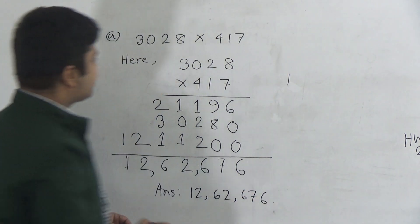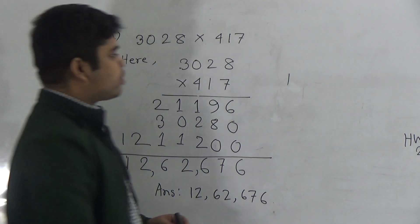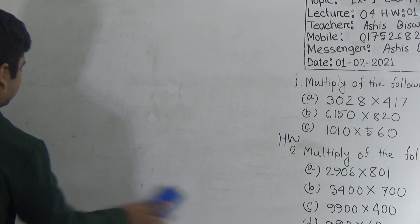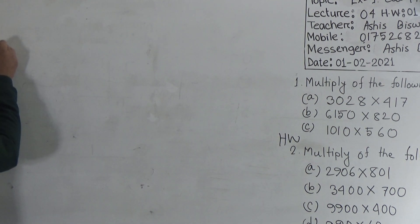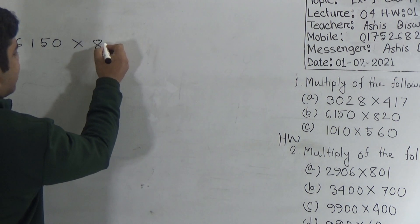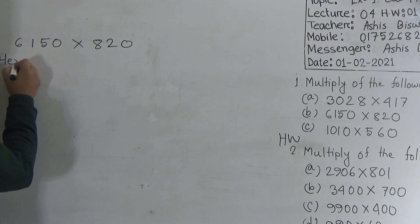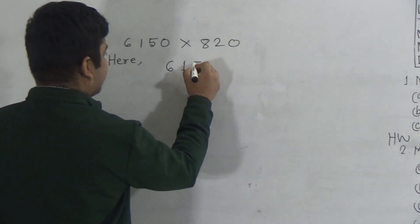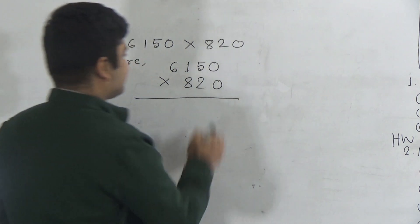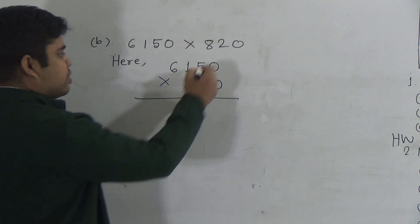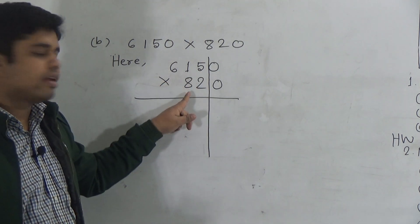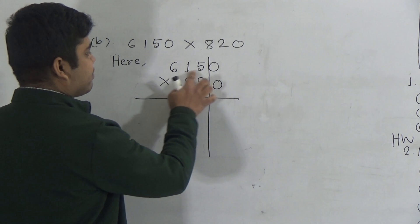Next we shall solve question number b: 6150 multiplied by 820. I write this here. My students, notice there is a zero in 6150 and a zero in 820. I separate these two zeros by a line, and now I multiply 615 by 82.